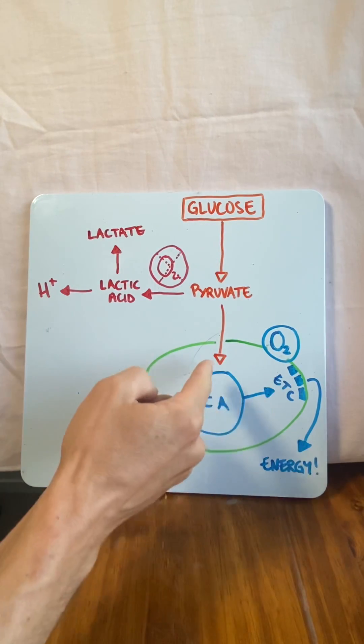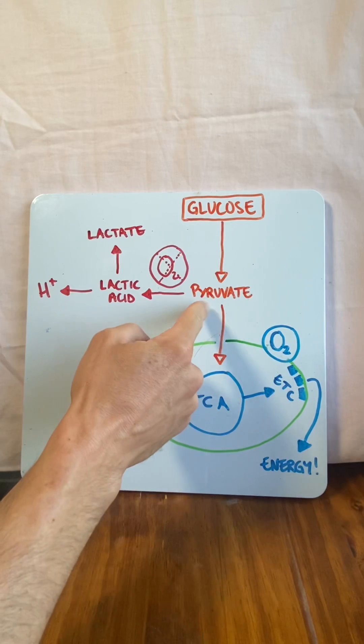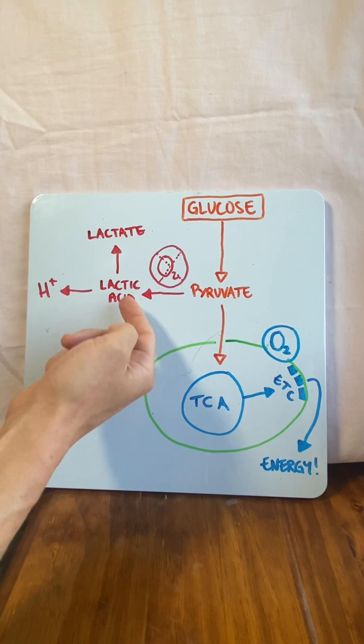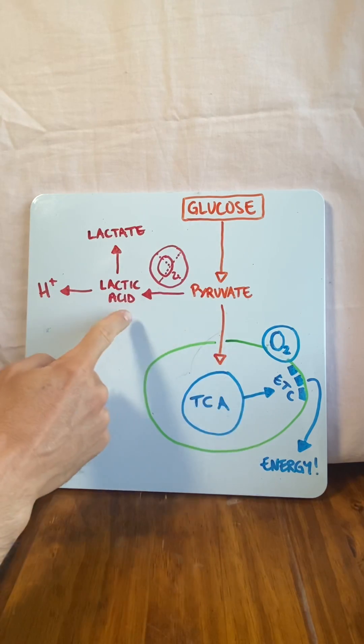So these products back up, back up, back up because there's not enough oxygen, as pyruvate. And pyruvate goes down this pathway called the anaerobic pathway, which doesn't use oxygen, and produces lactic acid.